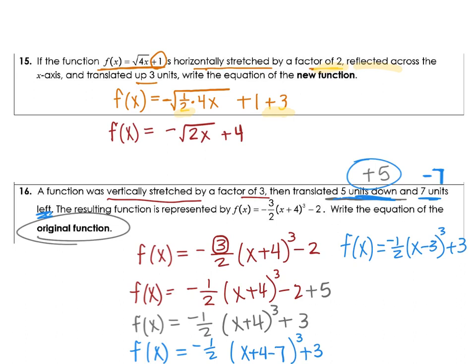We can go back and check again. If I do a vertical stretch by 3, I would multiply by 3 and that would generate that part back. Then translated down 5 units – if I subtract 5 out here, that is going to give me my negative 2. And then if I wanted to go to the left 7, I would have to add 7 on the inside, and that gave me my positive 4. So that one is really strange, but you have to work backwards here to get that original function.